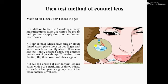It means if we are not sure whether the contact lenses have one, two, three markings or a colored edge, in that case check the package or check the manufacturer's website. Hope you all have understood the TACO test method of contact lens. Thank you.